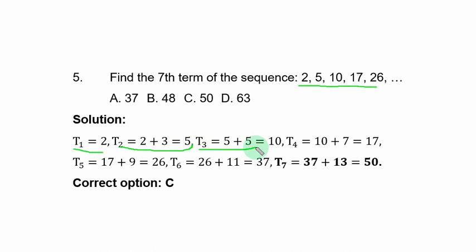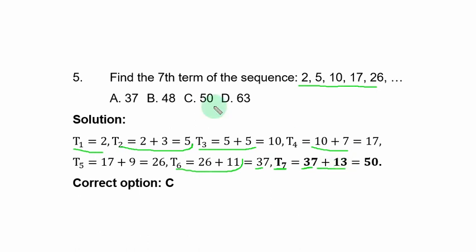The pattern is to add successive odd numbers: +3, +5, +7, +9, … The 5th term is 26 (after adding 9). Add 11 to get the 6th term: 26 + 11 = 37. Add 13 to get the 7th term: 37 + 13 = 50. The correct option is C.